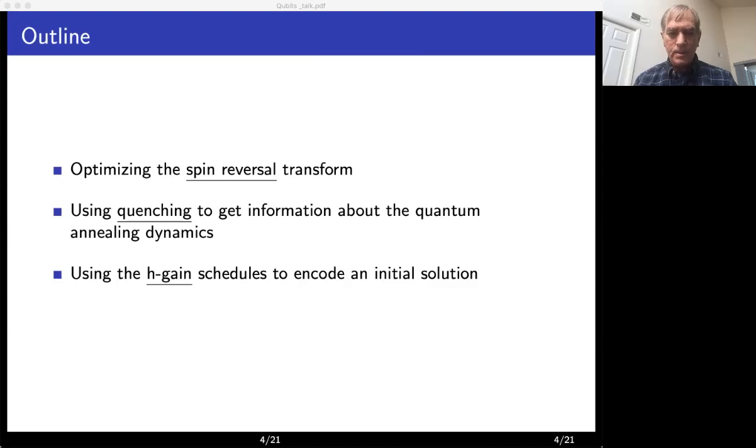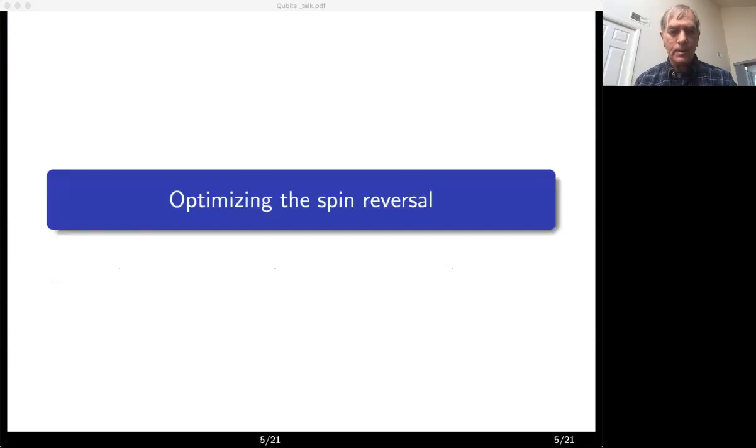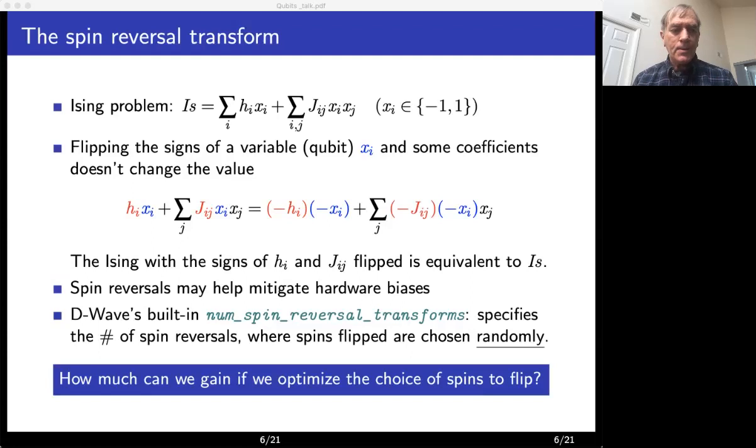First, we start with spin reversal. It will be brief, just a couple of slides to leave more time for the other two topics. What is a spin reversal? We are given an Ising, and the idea is that if we flip the sign of one variable and a few of the coefficients, the value won't change. More generally, we can select an entire set of spins to flip and compute the coefficients of the corresponding equivalent Ising. Despite the equivalence, such a change may help actually alleviate some of the hardware biases.